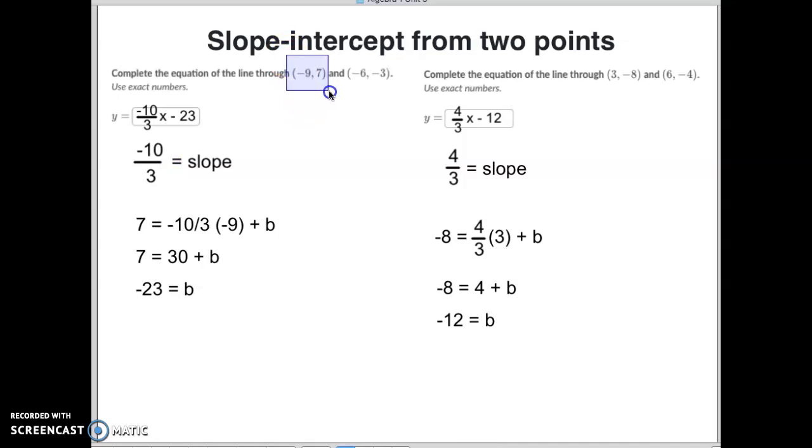We then choose any points, and I chose for both of these equations the first one. So 7 is my y value and negative 9 is my x value. Then I take negative 9 times negative 10 which is positive 90. 90 divided by 3 is 30, so I've got 7 equals 30 plus b. I subtract 30 from both sides and I get b equaling negative 23.